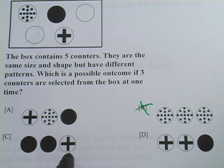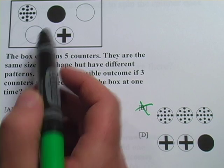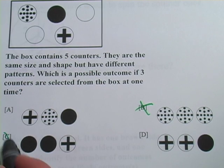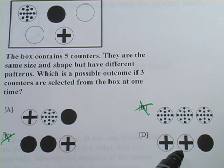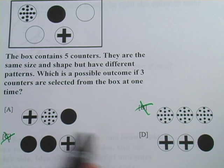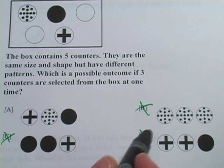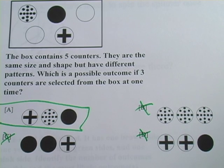C, two black ones and a plus sign. Well, there's only one black one in there, so there's no way if you grab three at once you could get two black ones. And D, two plus signs. Again, there's only one plus sign in there, so there's no way you can get two plus signs at one time. So clearly A is the only possible outcome that you could get here.